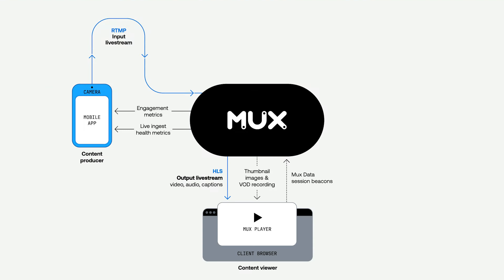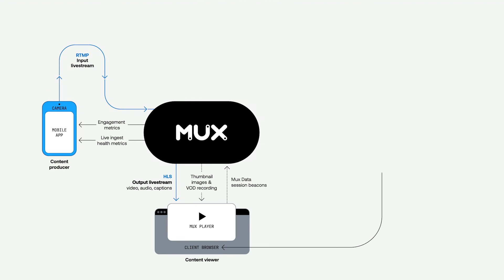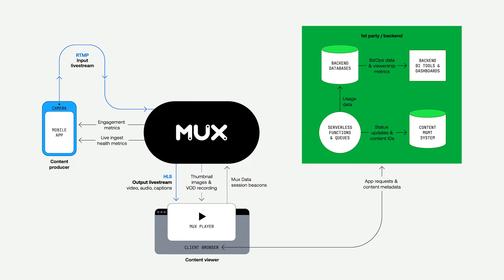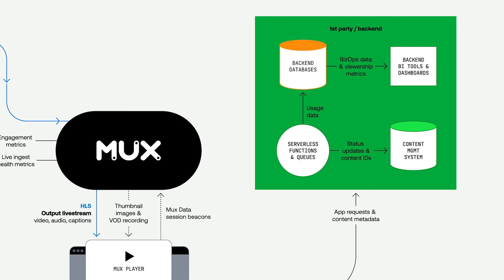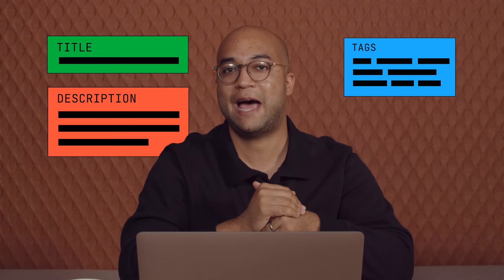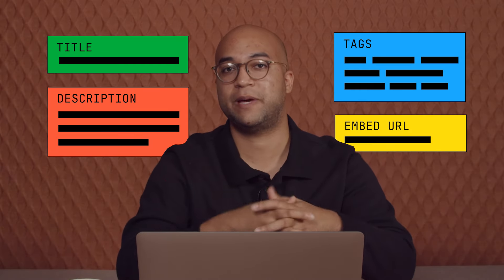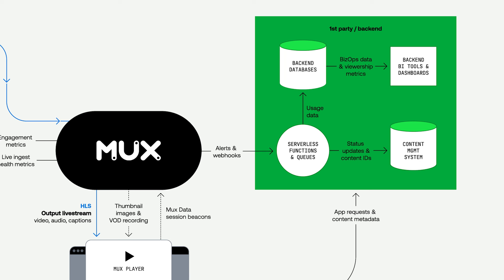Now that we have the core video loop established, you're probably wondering how this actually links up to your backend so you can start making requests to Mux. Here we have a simplified representation of what your backend could look like, with a database, functions and queues, and a CMS. If you don't have a CMS or you're not sure which one to start with, we have a lot of integrations in case you want to add content metadata to your video pages. You can always call our API from your backend, but you can also make use of some of our asynchronous notification features to keep up to date with what's happening in your environment.